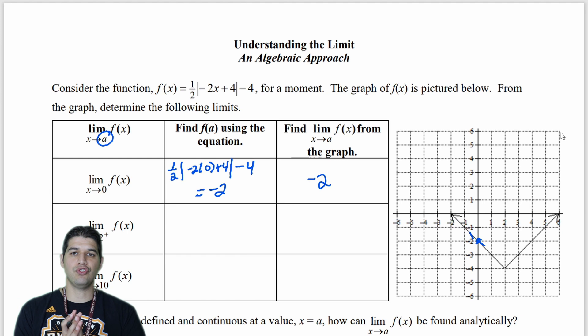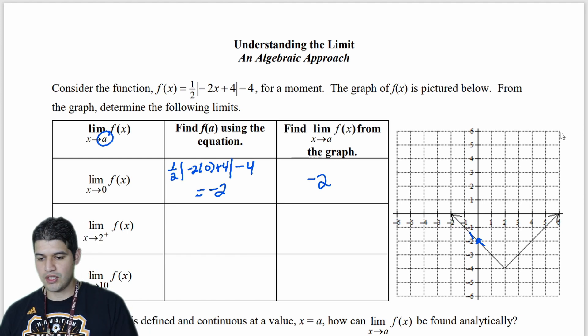Limit of f of x as x approaches 2 from the right side. So again, I'm going to substitute 2 into my equation. So 1 half, absolute value, negative 2 times 2, plus 4. Close, absolute value, minus 4.